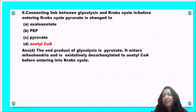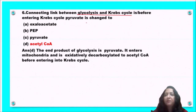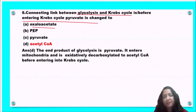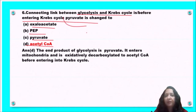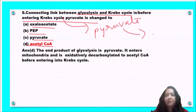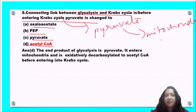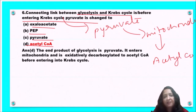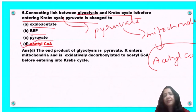Next question: the connecting link between glycolysis and the Krebs cycle — before entering the Krebs cycle, pyruvate is changed to oxaloacetate, PEP, pyruvate, or acetyl coenzyme A? The end product of glycolysis is pyruvate, which enters the mitochondria and is converted into acetyl coenzyme A. Acetyl coenzyme A is the product formed before entering the Krebs cycle. So option D is the correct answer.